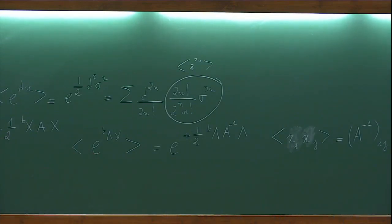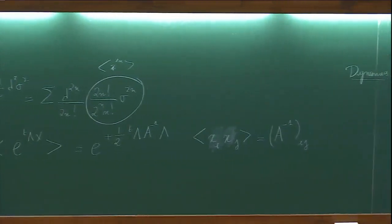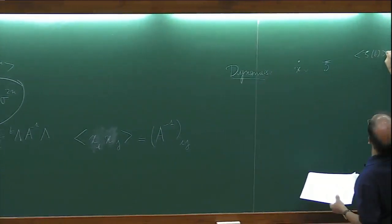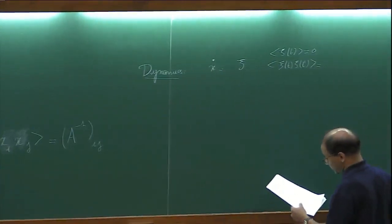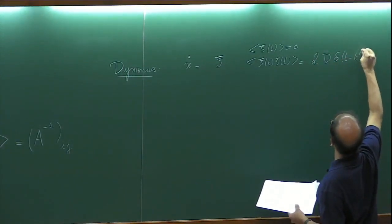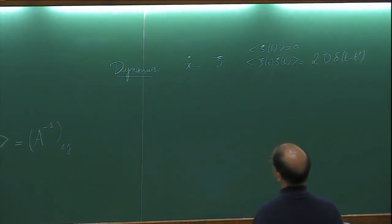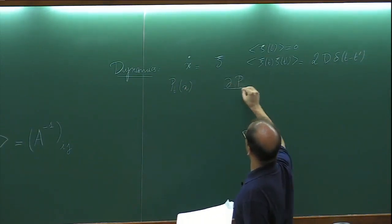That was statics. Moving to dynamics, we have processes. The simplest process in one variable is Brownian motion or Langevin. The simplest Langevin equation is ẋ = ξ, where ξ is white noise with zero average and correlation ⟨ξ(t)ξ(t')⟩ = 2D δ(t−t'). The probability distribution of x at time t solves the heat equation, ∂P/∂t = D ∂²P/∂x², and the solution is the Gaussian P(x,t|x₀,0) = 1/√(4πDt) exp(−(x−x₀)²/4Dt).